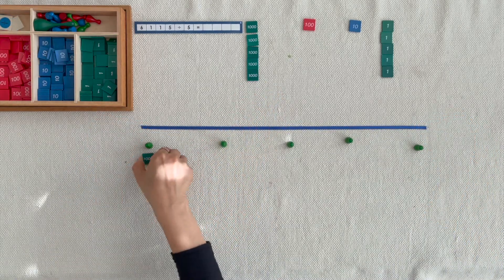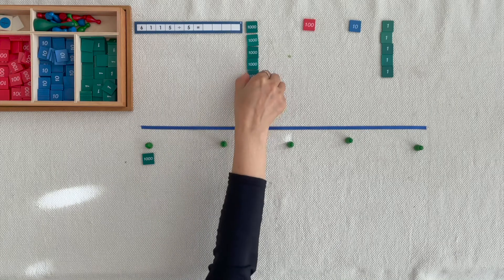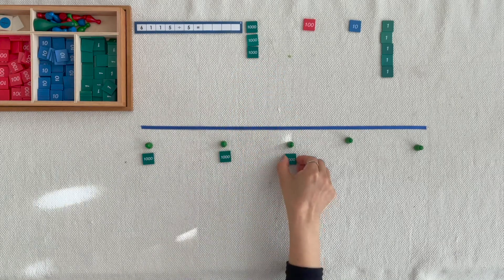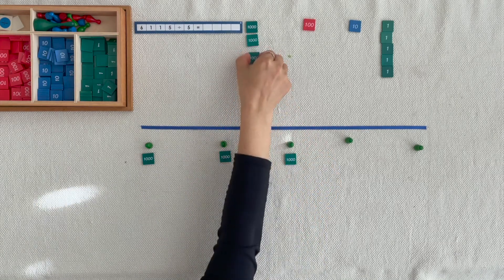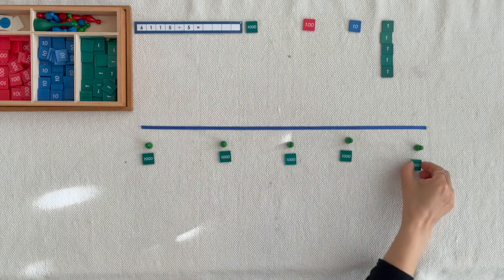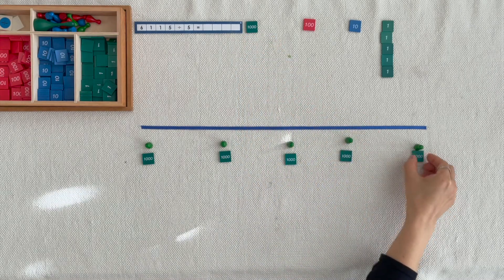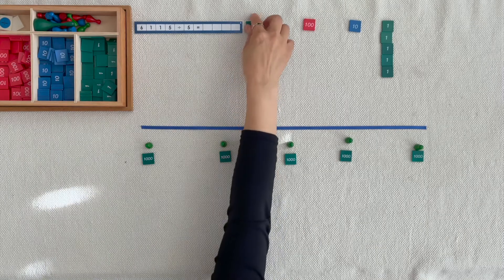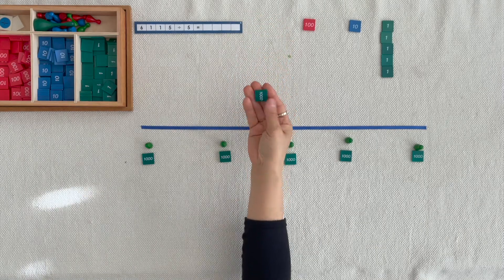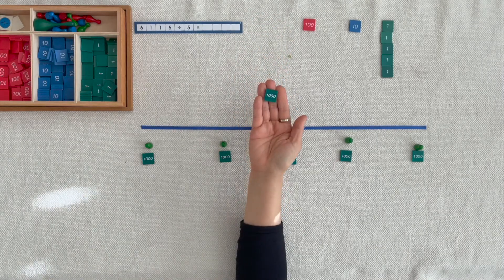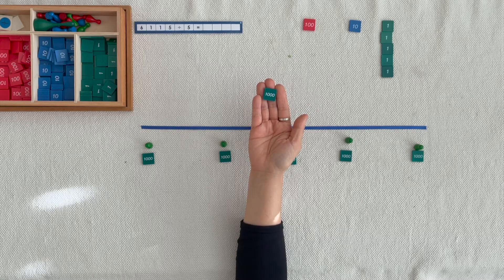1 for you, 1 for you, 1 for you, 1 for you, 1 for you. We can't divide 1,000 equally among 5 Skittles, so we're going to exchange it for 10 hundreds.